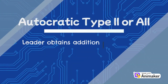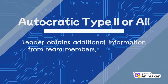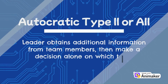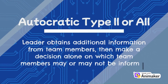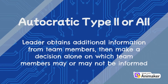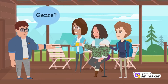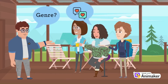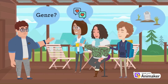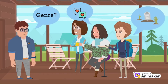Autocratic Type 2, or A2, is a situation where the leader obtains additional information from team members, then makes a decision alone, and team members may or may not be informed of the outcome. For example, you ask your friends what genre they prefer or what new release movie they recommend, then you make the decision.